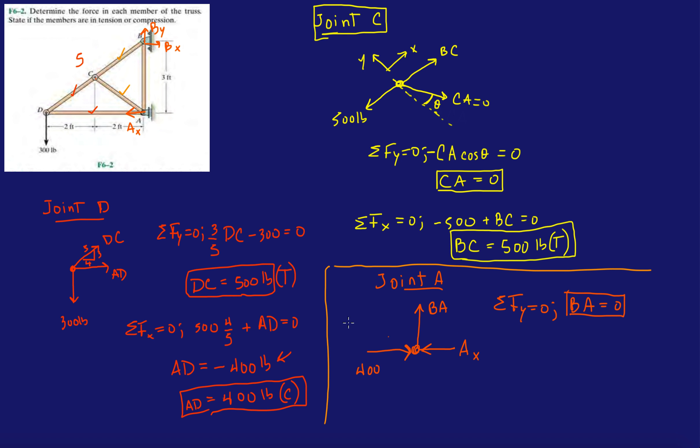And then, so, the only forces, the only members that carry forces were DC, tension, 500. AD was in compression, 400 pounds. BC was in tension, and the other two members were just zero force members.